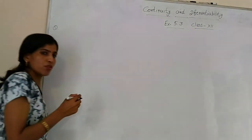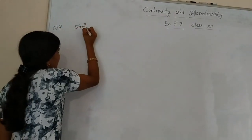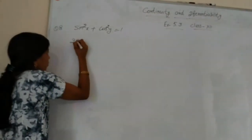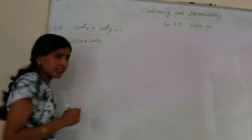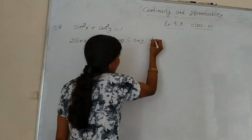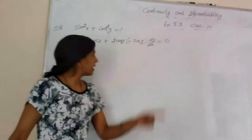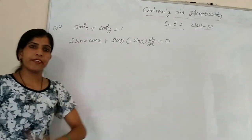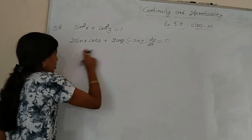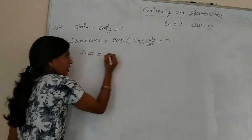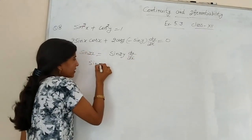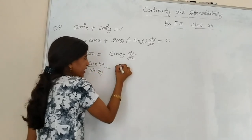Question 8: sin²x + cos²y = 1. Differentiating, first term gives 2 sin x · cos x · 1, and second term gives 2 cos y · (−sin y) · dy/dx. The right-hand side derivative is 0. So we get 2 sin x cos x − 2 sin y cos y · dy/dx = 0, which simplifies to sin 2x − sin 2y · dy/dx = 0.